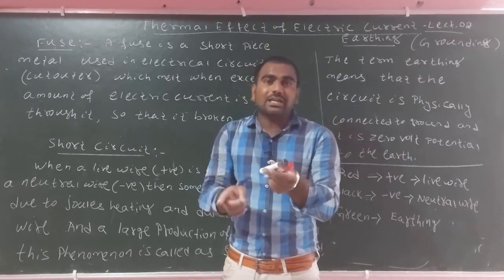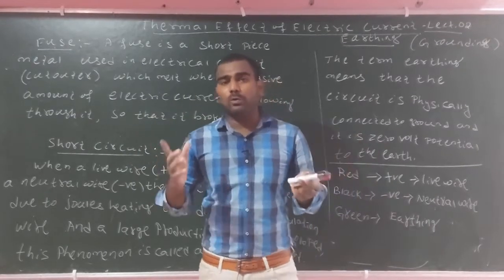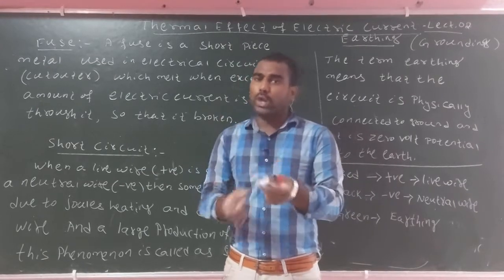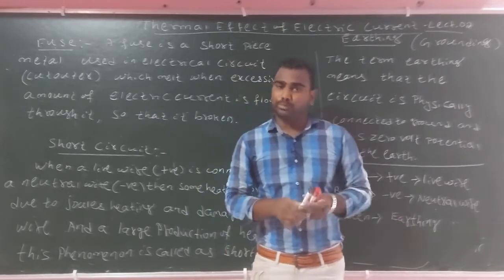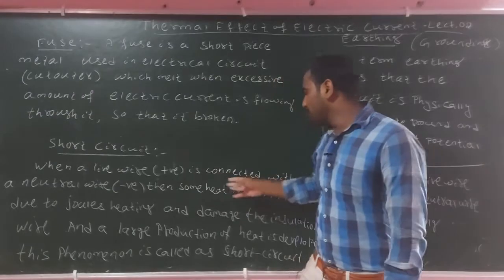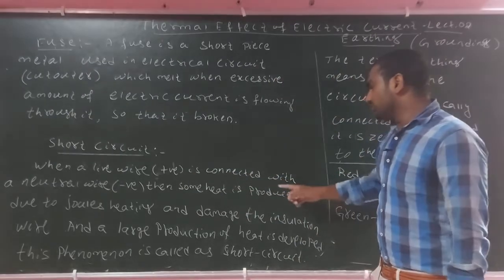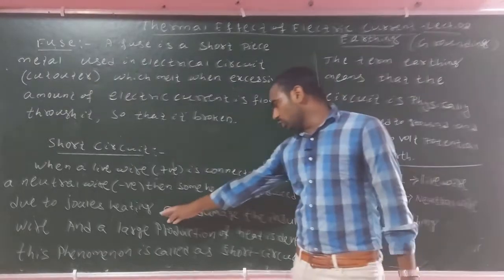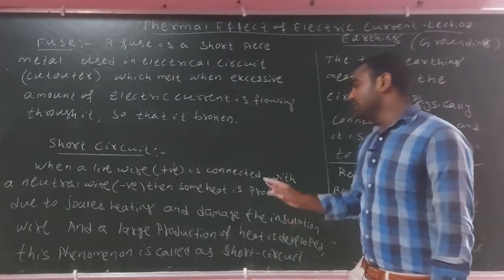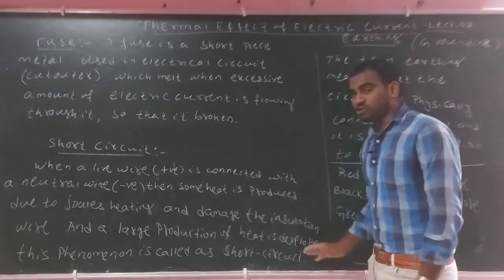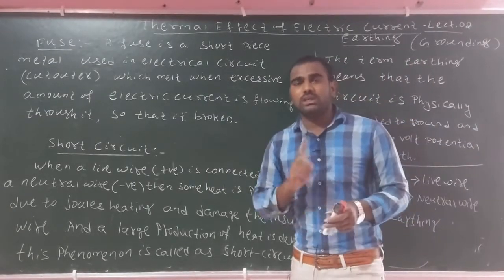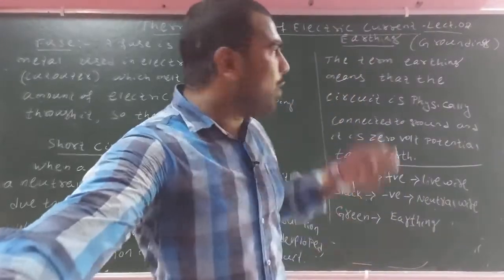When heat is developed by Joule heating and the live wire comes into contact with the neutral wire, heat is produced which damages the insulation of the wire. A large amount of heat is developed. This phenomenon is called a short circuit — the large heat production when positive and negative wires come into contact.